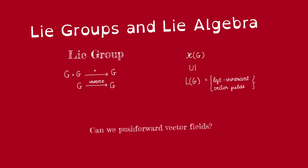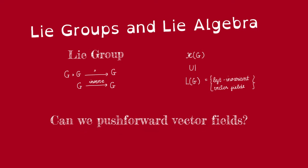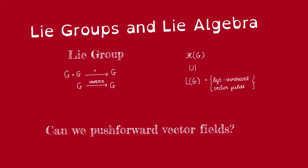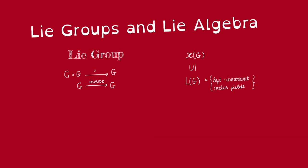Remember in the previous video we asked if we could push forward vector fields, and we said yes in the case of Lie groups and left invariant vector fields on Lie groups. So what are Lie groups? A Lie group is a group that is also a manifold such that the group operations are smooth — meaning the multiplication map and the inverse map are both smooth.